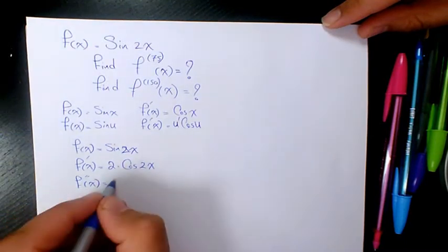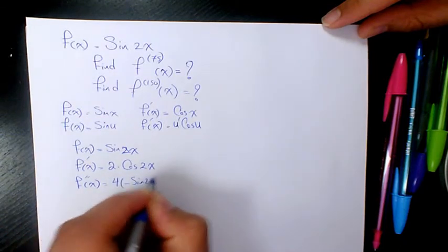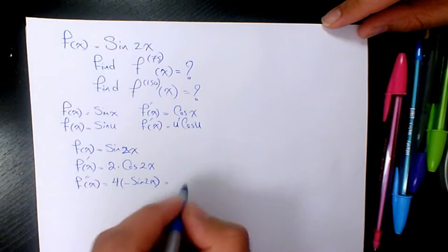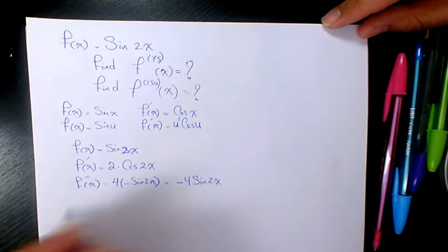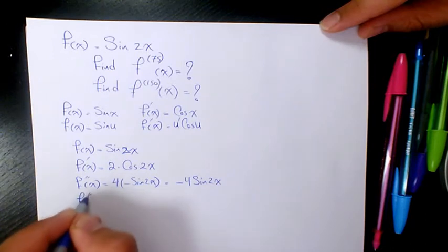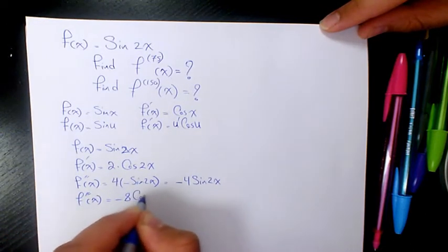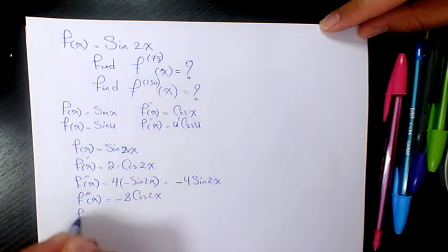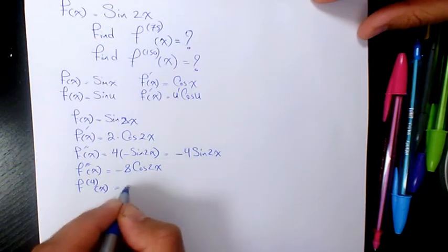Because the derivative of cosine is negative sine, so that's going to be negative 4 sine 2x. The third derivative will be negative 8 cosine 2x, and the fourth derivative will be positive 16 sine 2x.